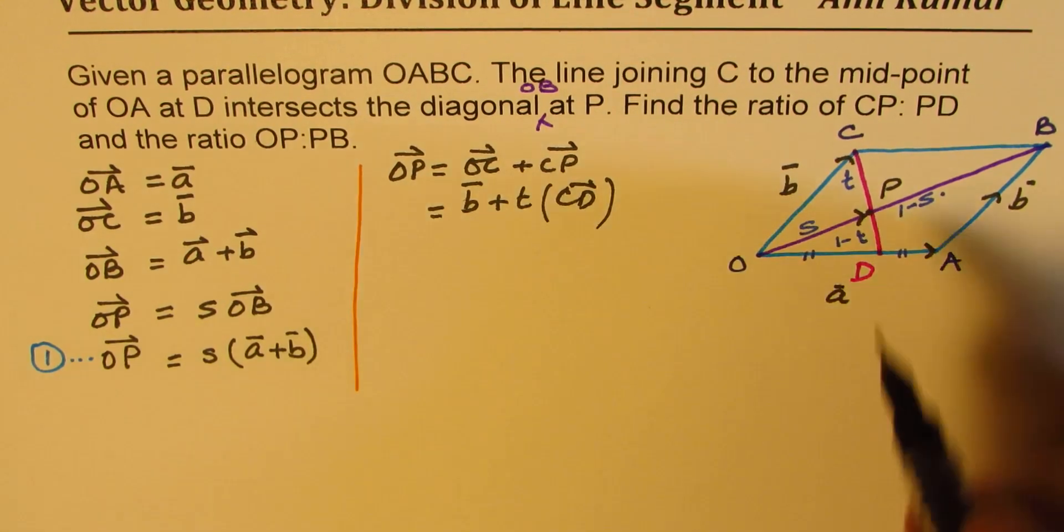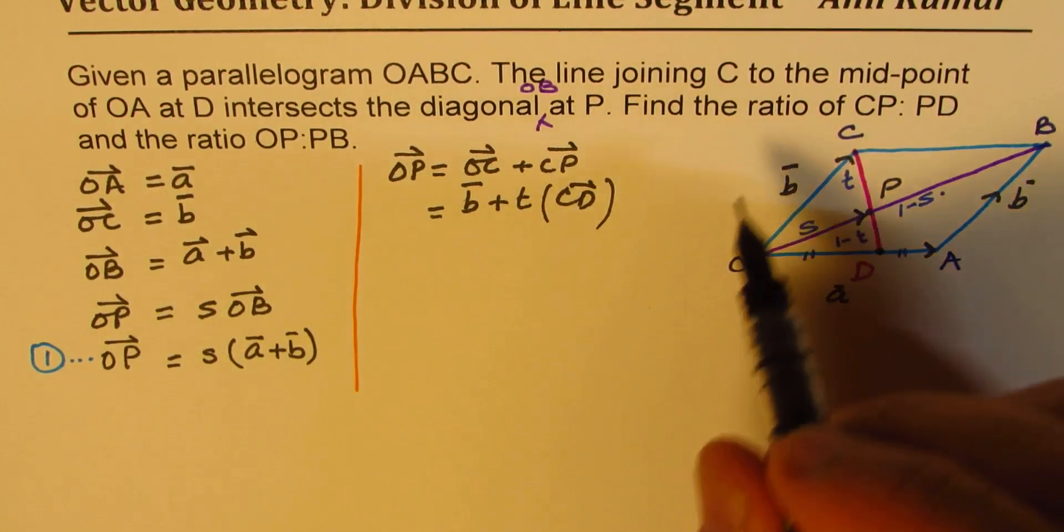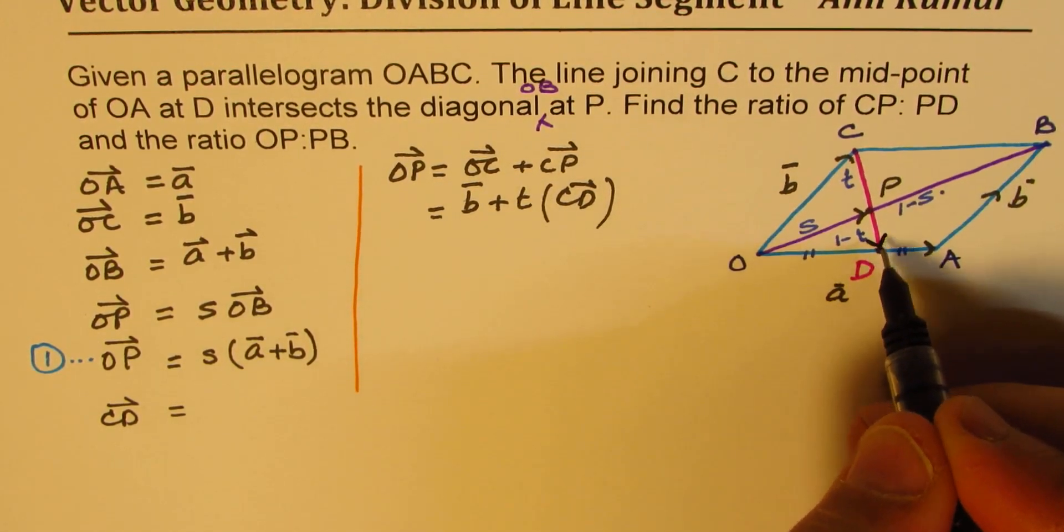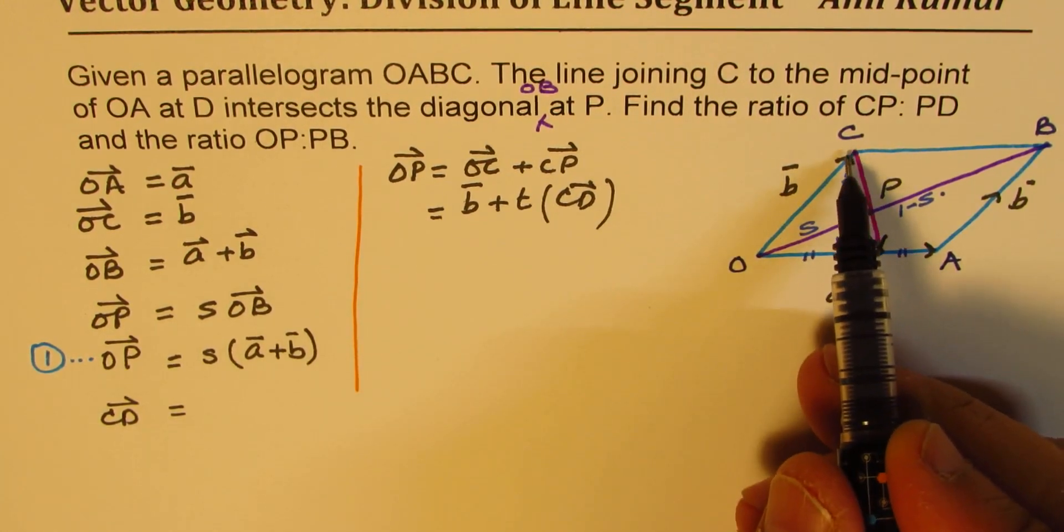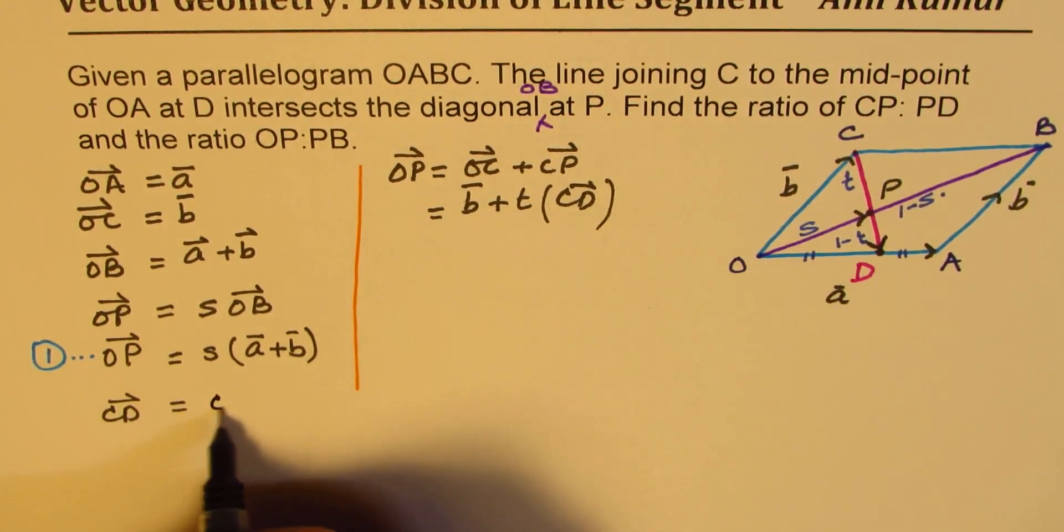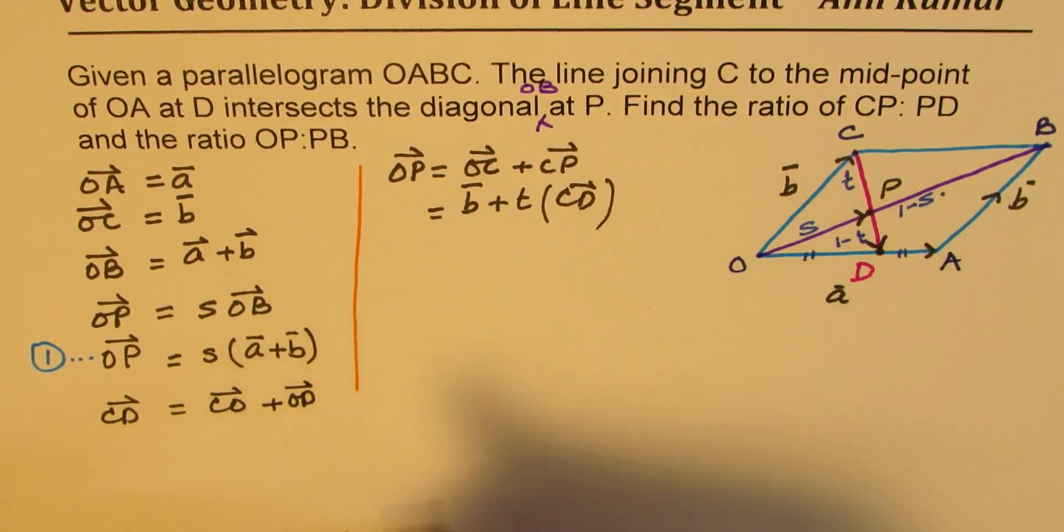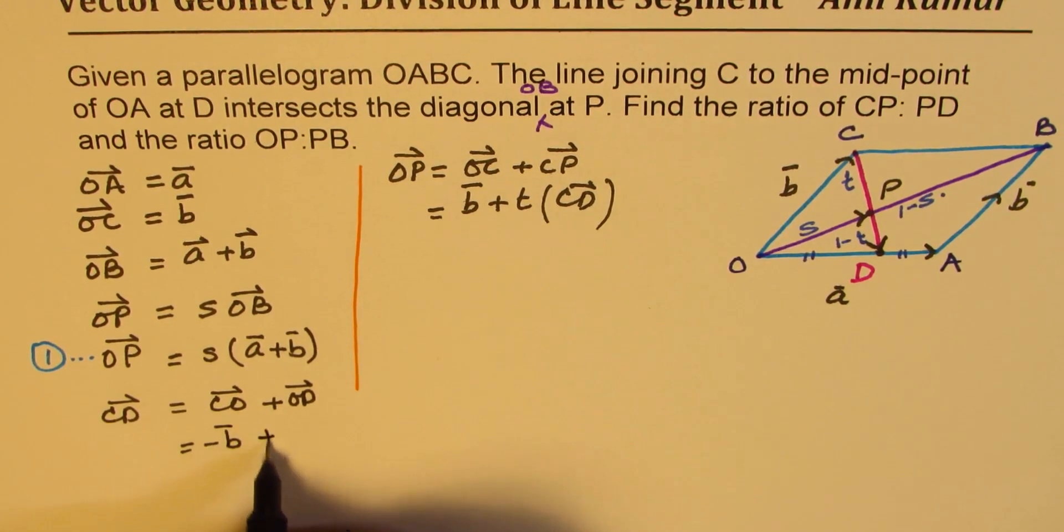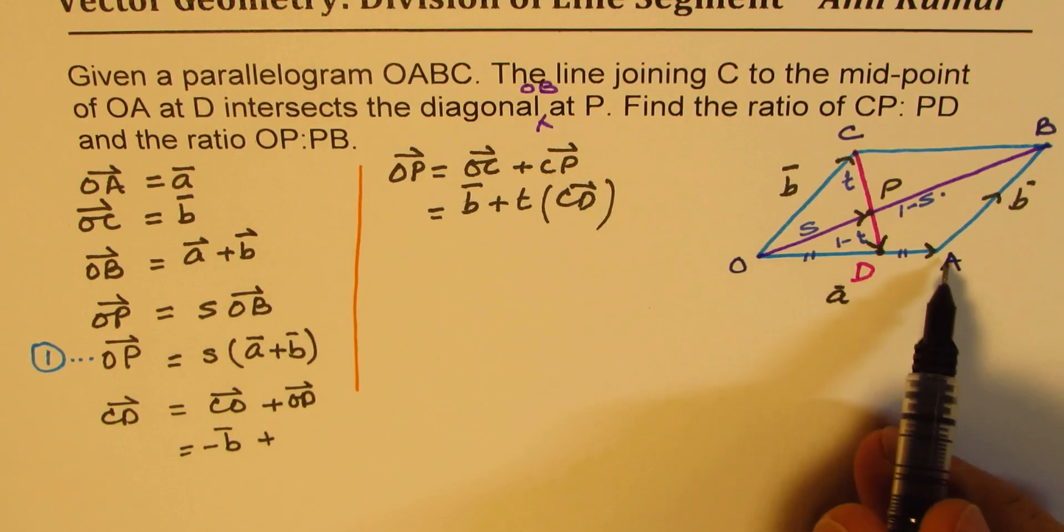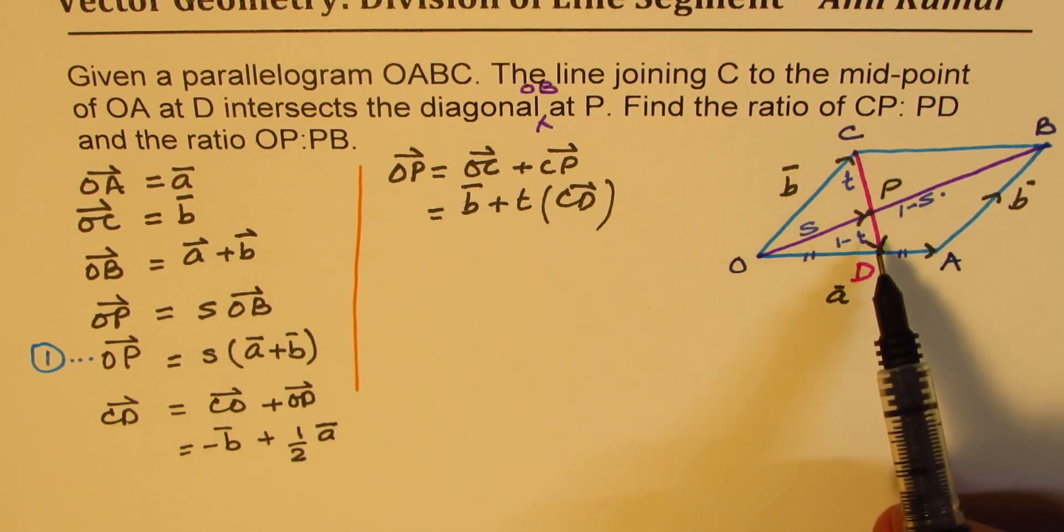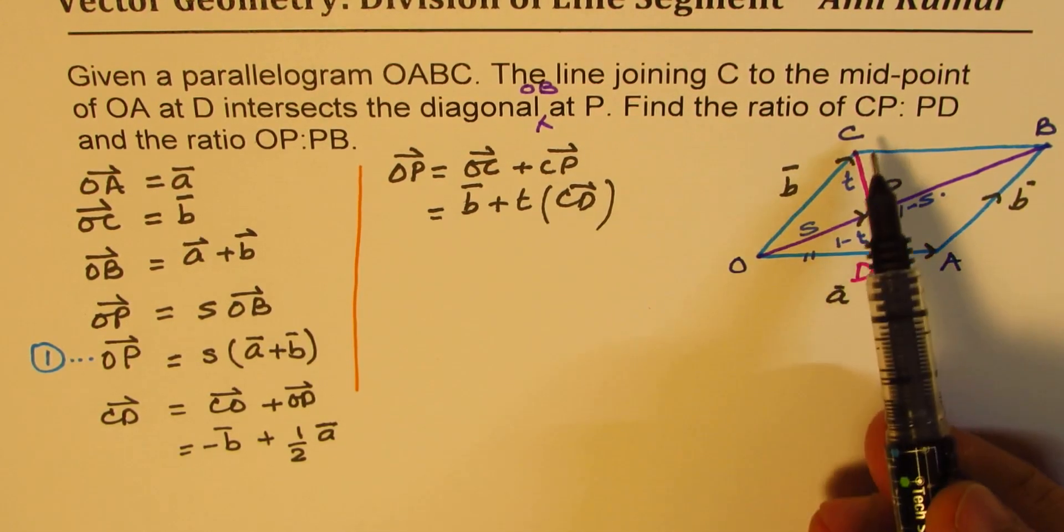Now, what is C to D? C to D is what? Well, let's write what CD is. So CD is equal to what? C to D will be CO plus OD. CO is minus B, plus O to D. This is the midpoint of OA, so it is half A. So CD is basically half A minus B.